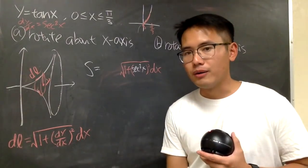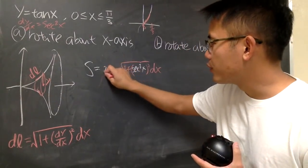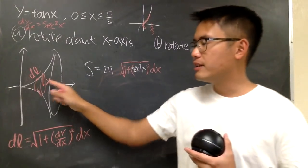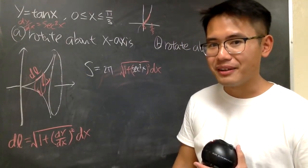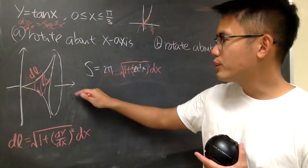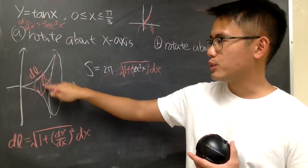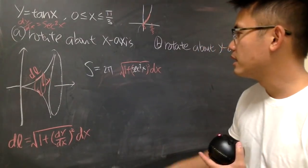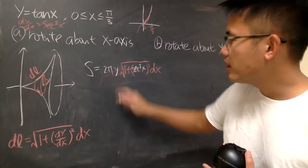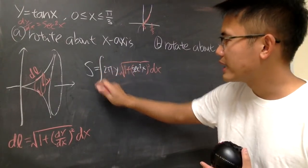This portion is for dl. Now we are going to have the 2 pi, and pay attention to the radius, which is the y in here. Once again, if you rotate about the x-axis, the radius in this situation will be y. So you put down the y here, and you are going to add a bunch of this. You have the integral.